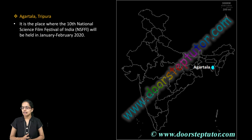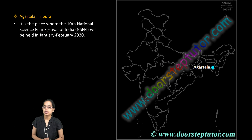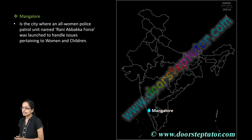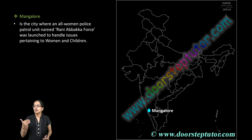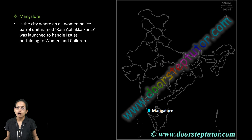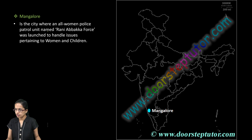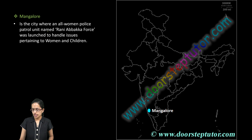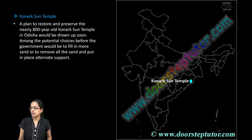The next is Agartala, where the National Science Film Festival was organized in 2020. The next is Mangalore, where an all-women police patrol under the name Rani Abaka Force has been launched to handle issues of women and children in the regions of Mangalore, Karnataka.